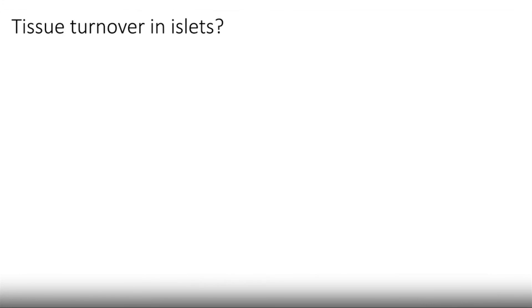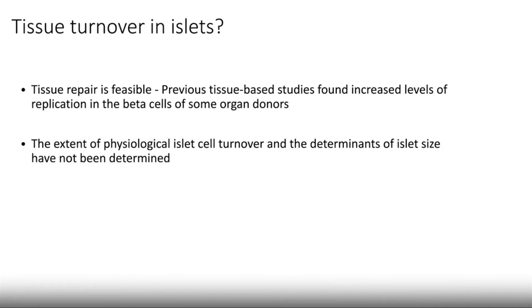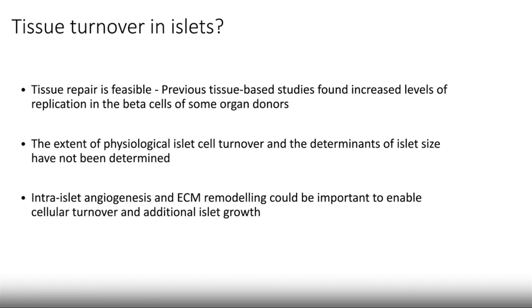What could this data mean? From our transcriptomic data we can only speculate based on earlier findings in the literature. There have been previous findings of increased replication in all pancreatic cell types in a subset of organ donors, showing that turnover of the endocrine tissue is feasible at least under some conditions. There could also be an extent of physiological islet cell turnover. Intra-islet angiogenesis and extracellular matrix remodeling from endothelial cells could be an important piece in this puzzle of cellular turnover and remodeling.